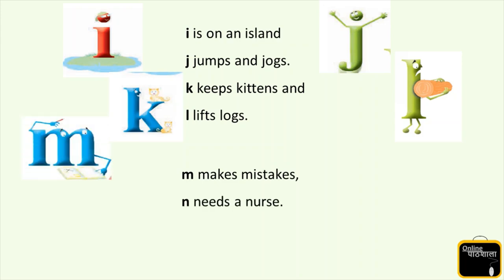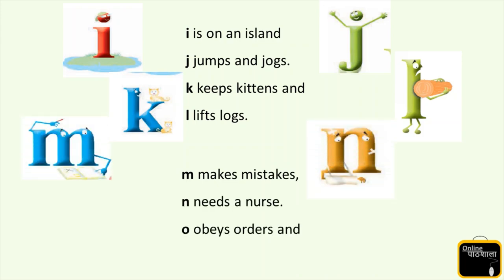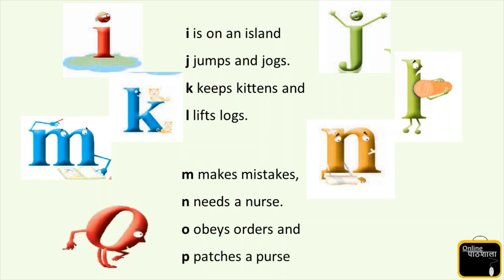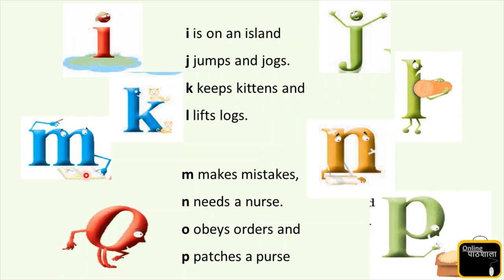M makes mistakes. N needs a nurse. O obeys orders. And P patches a purse. M is doing his homework and he made a mistake - now he is thinking how to avoid mistakes. And N is ill, N is injured - see the bandages he has, so N needs a nurse. O obeys everyone's orders - O is a very good alphabet. And P patches a purse - the purse may be torn and he is trying to patch it.